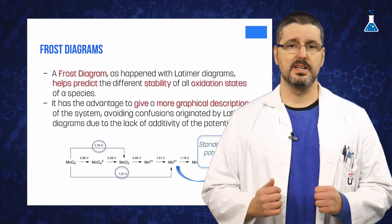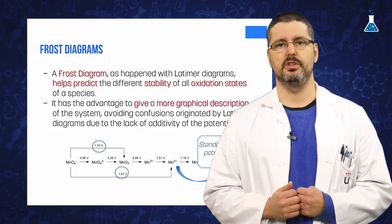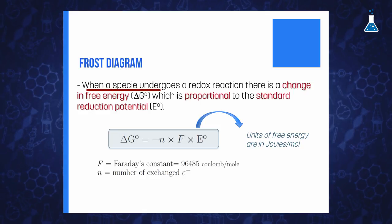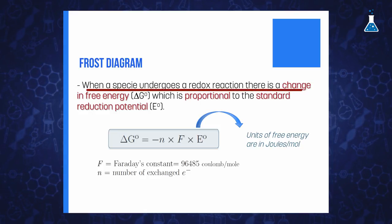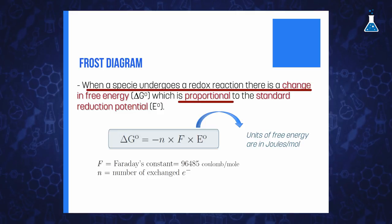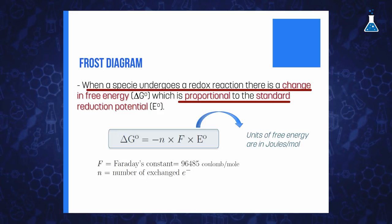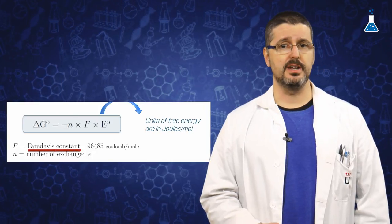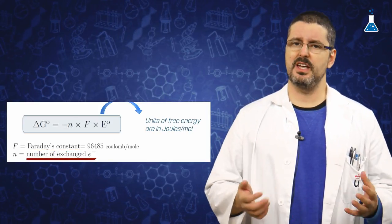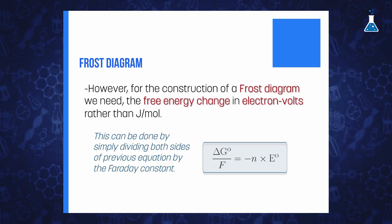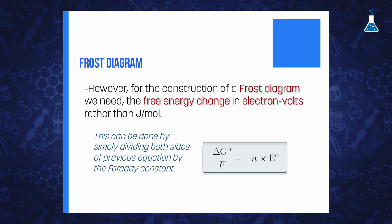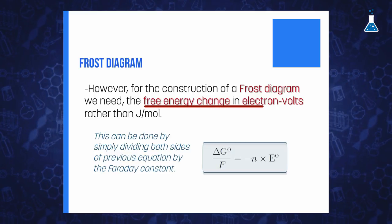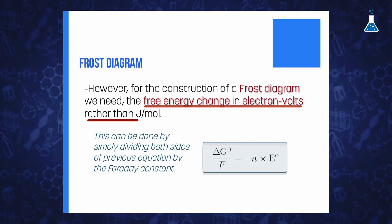Let's see what this diagram is about and how we can construct it. When a particular species undergoes a redox reaction, there is a change in free energy that is proportional to the standard redox potential through the equation ΔG° = -nFE°, where F is the Faraday constant and n is the number of exchanged electrons. Although that gives us the free energy change in joules, in this type of diagram the free energy change is easily expressed in electron volts rather than kJ per mole.